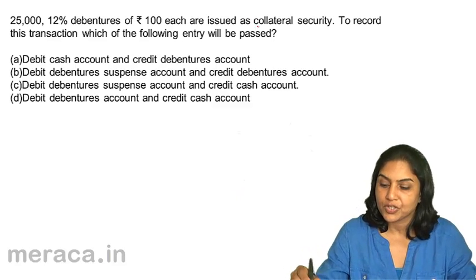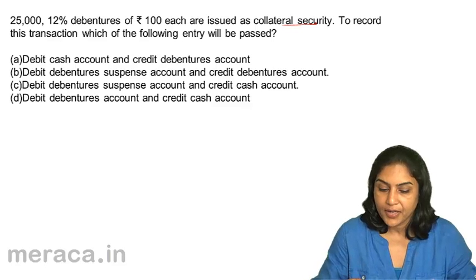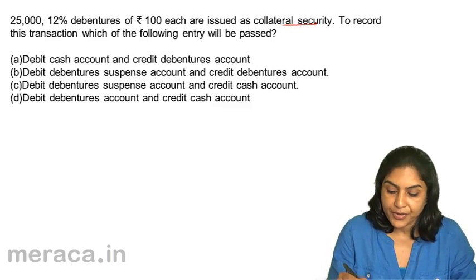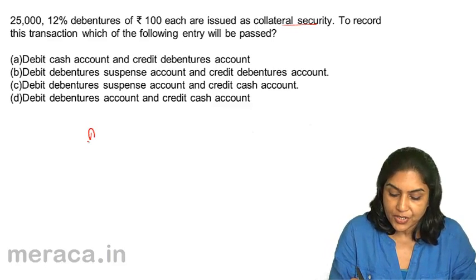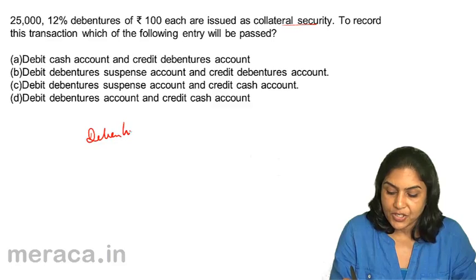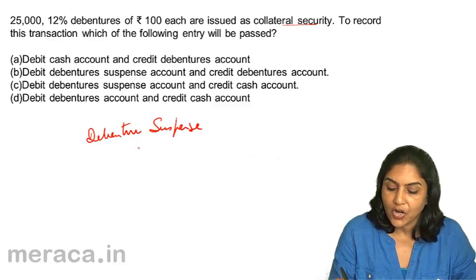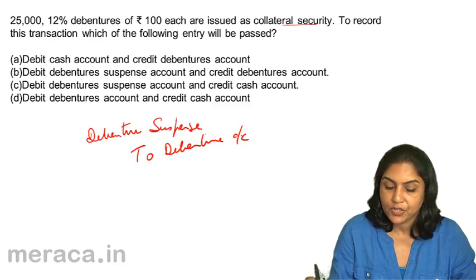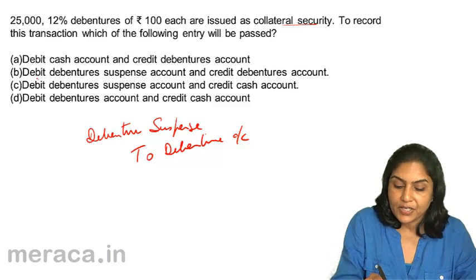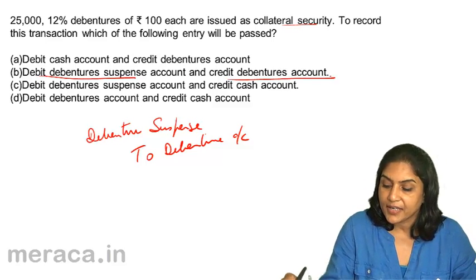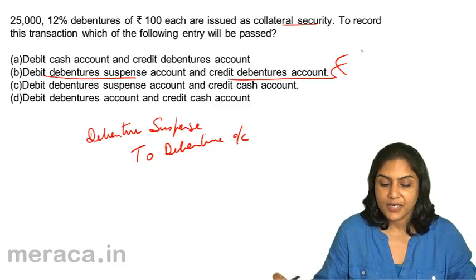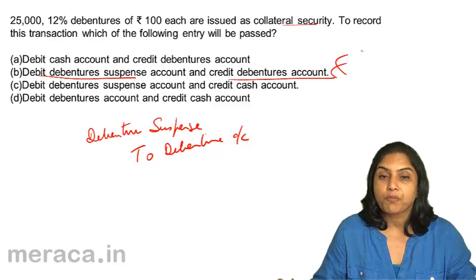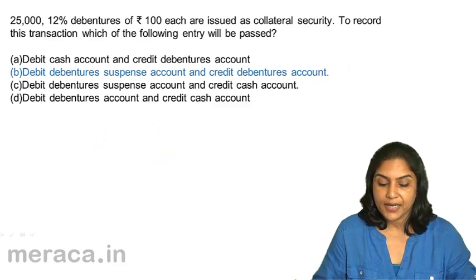It is issued as collateral security. The entry is normally to credit debentures and debit debenture suspense account. Alternatively, we need not pass any entry. So the entry should be debit debenture suspense account, credit debentures account. Debit debenture suspense and credit debentures account is the correct answer — option B.